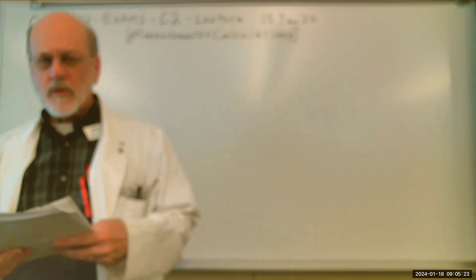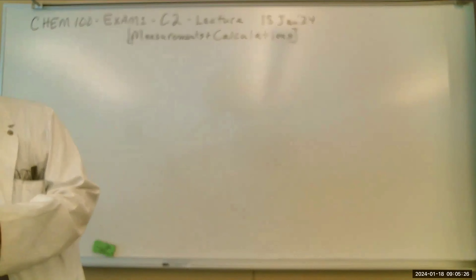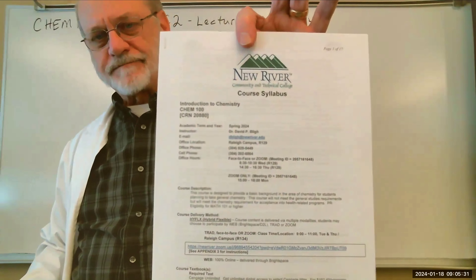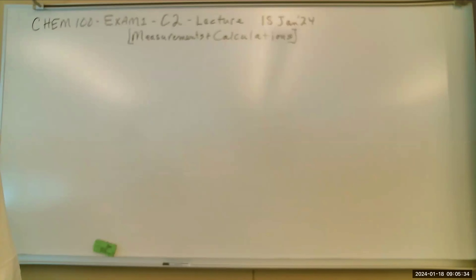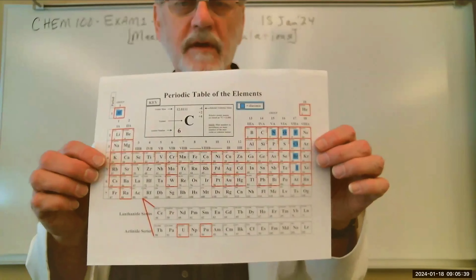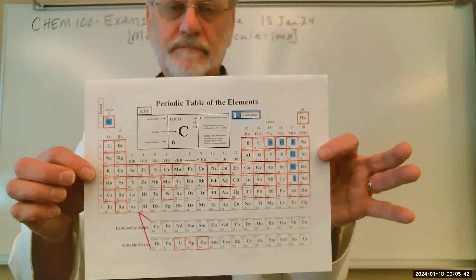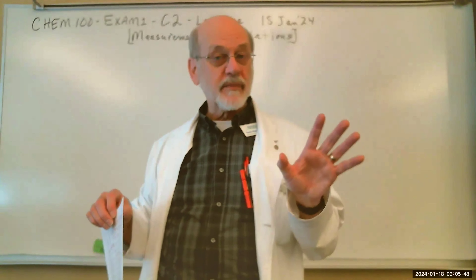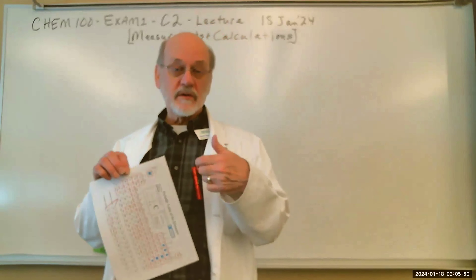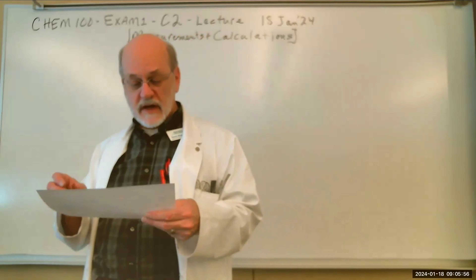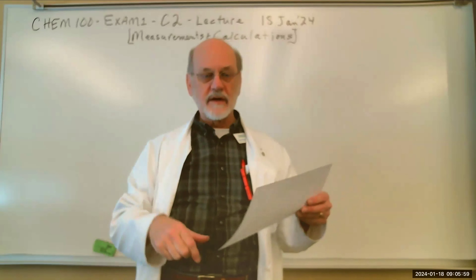So anyone who sees this recording — assuming it stays in focus — there's the syllabus. That's fairly simple. This is the periodic table with all the red boxes around those elements I want you to memorize. All you have to do is memorize the symbols. You don't have to memorize atomic number, mass, or any of those charges. I just want you to know the symbol and the element it represents.